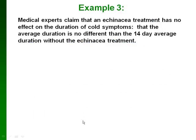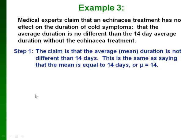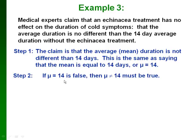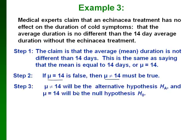For the echinacea example, the claim is that the treatment has no effect — meaning the average duration is the same 14 days as without treatment. In symbolic form: mu = 14. The opposite of that is mu ≠ 14. The one without the equal sign — mu ≠ 14 — becomes the alternative hypothesis, and mu = 14 becomes the null hypothesis. So: H₀: mu = 14, Hₐ: mu ≠ 14.